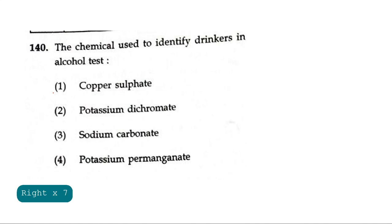Question 140: The chemical used to identify drinkers in alcohol test. People who are drunk are tested using potassium dichromate in hospitals. This is a very major compound used to identify who are drunk. The formula is K2Cr2O7.